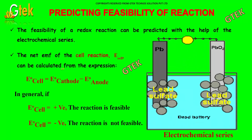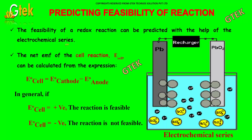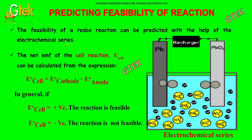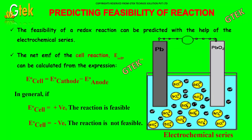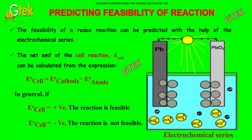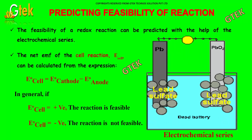Now let's discuss predicting the feasibility of a reaction. The feasibility of a redox reaction can be predicted with the help of the electrochemical series. The net EMF of the cell, i.e., E0 cell, can be calculated from the expression: E0 cell = E0 cathode minus E0 anode.